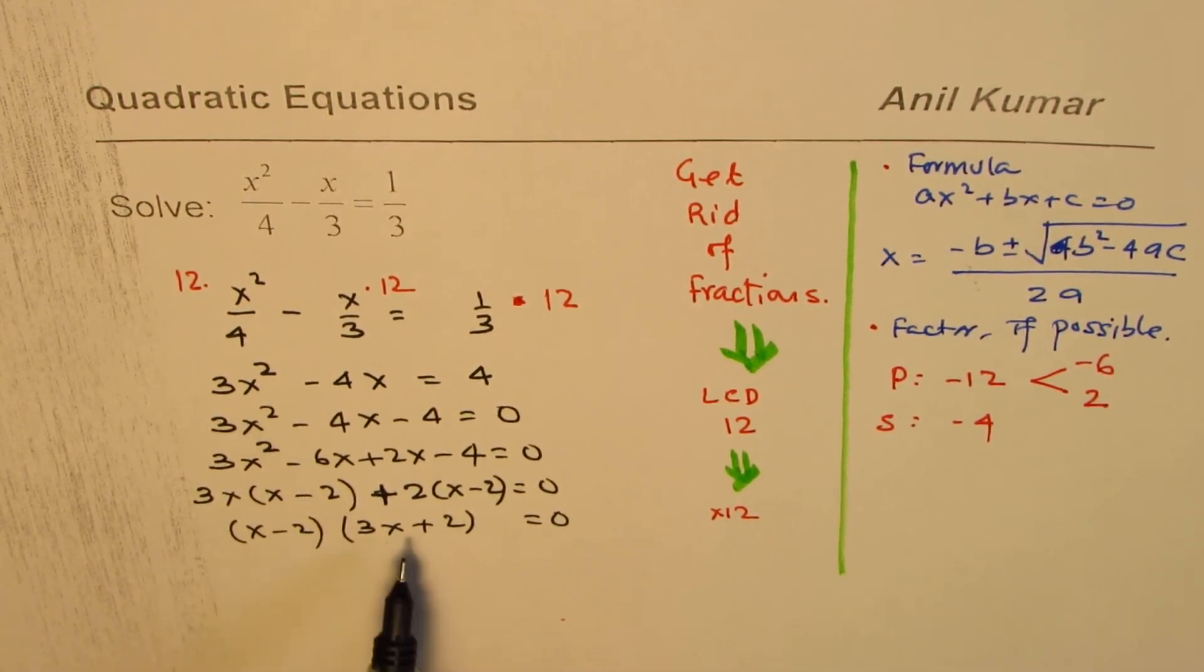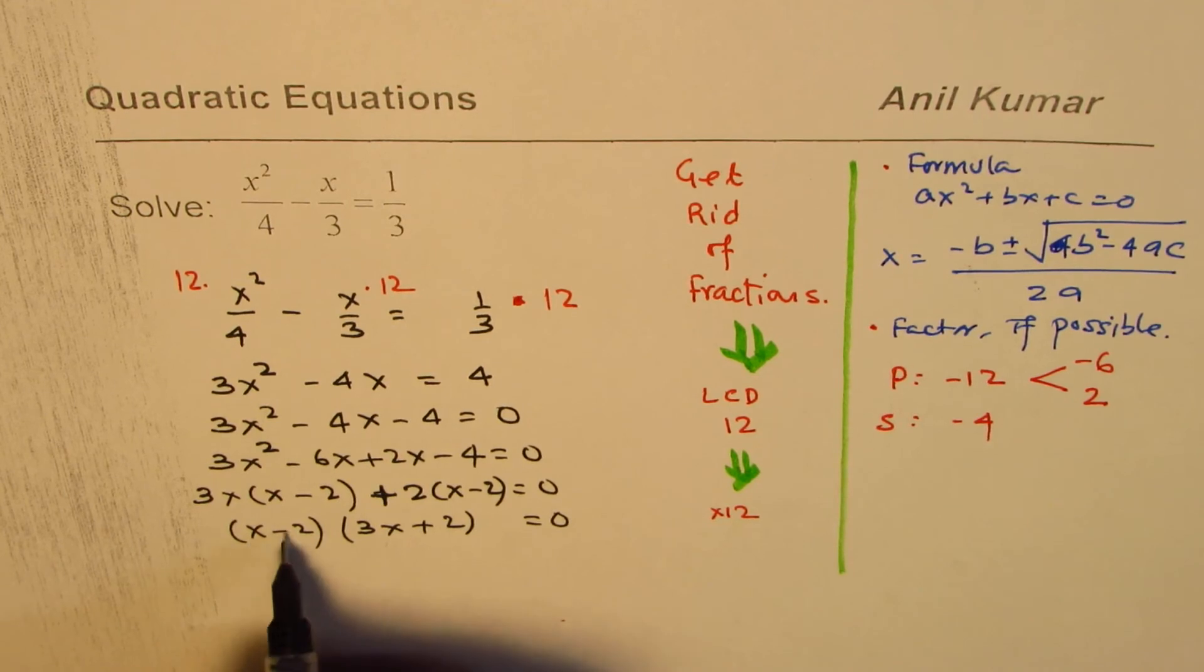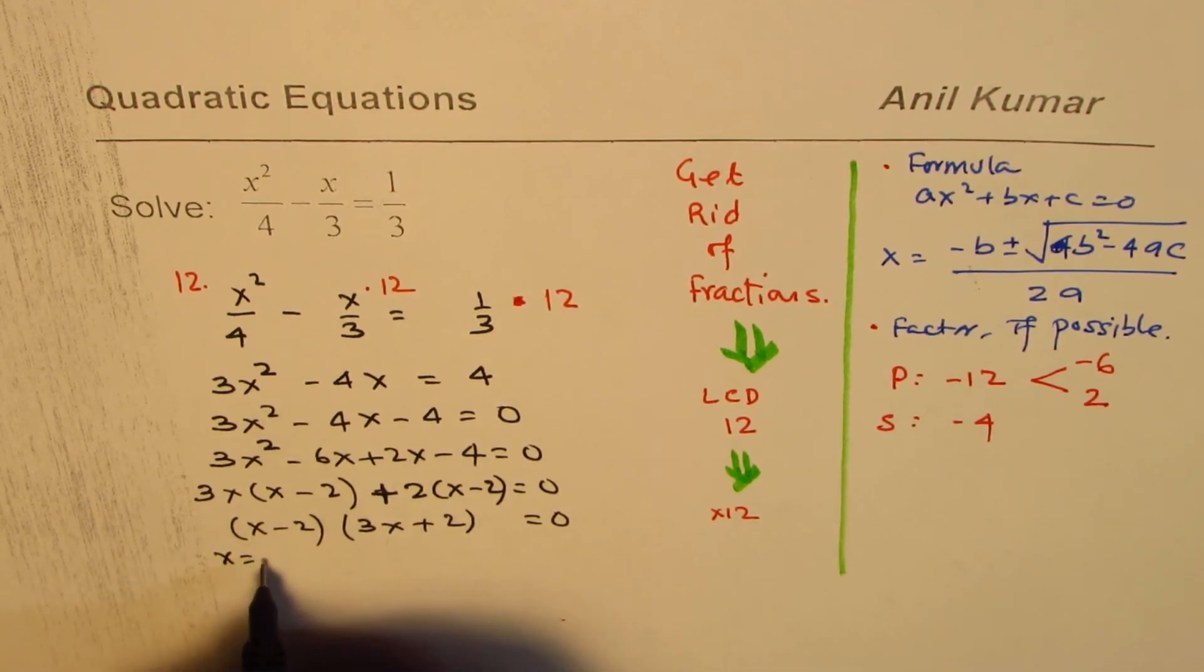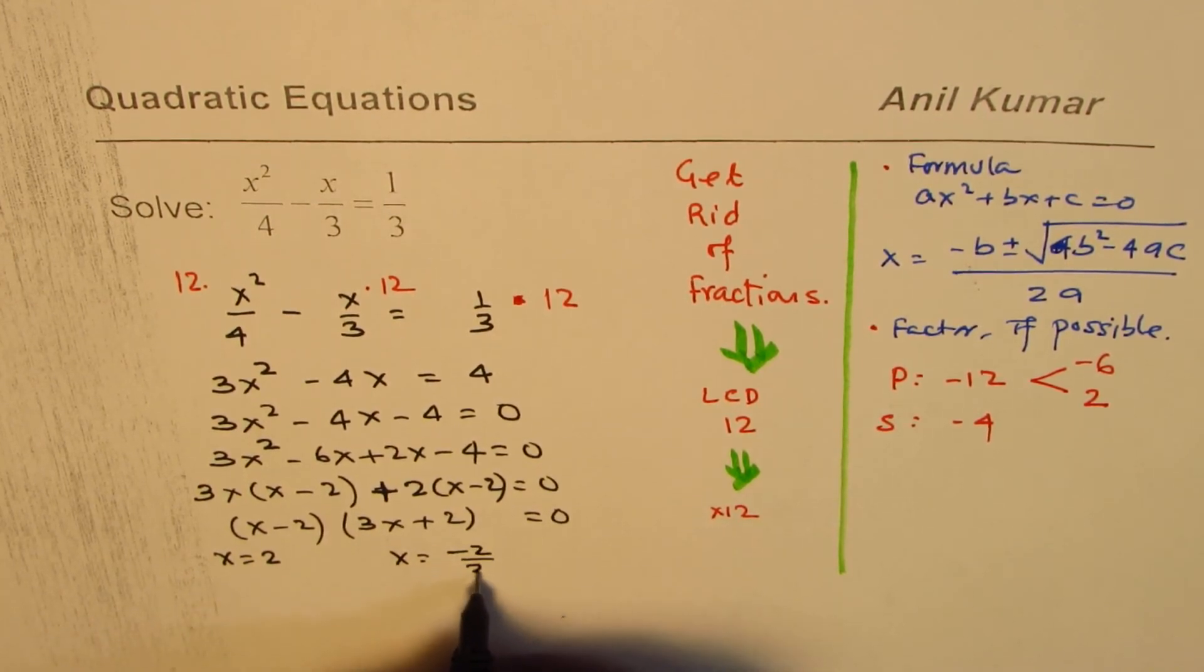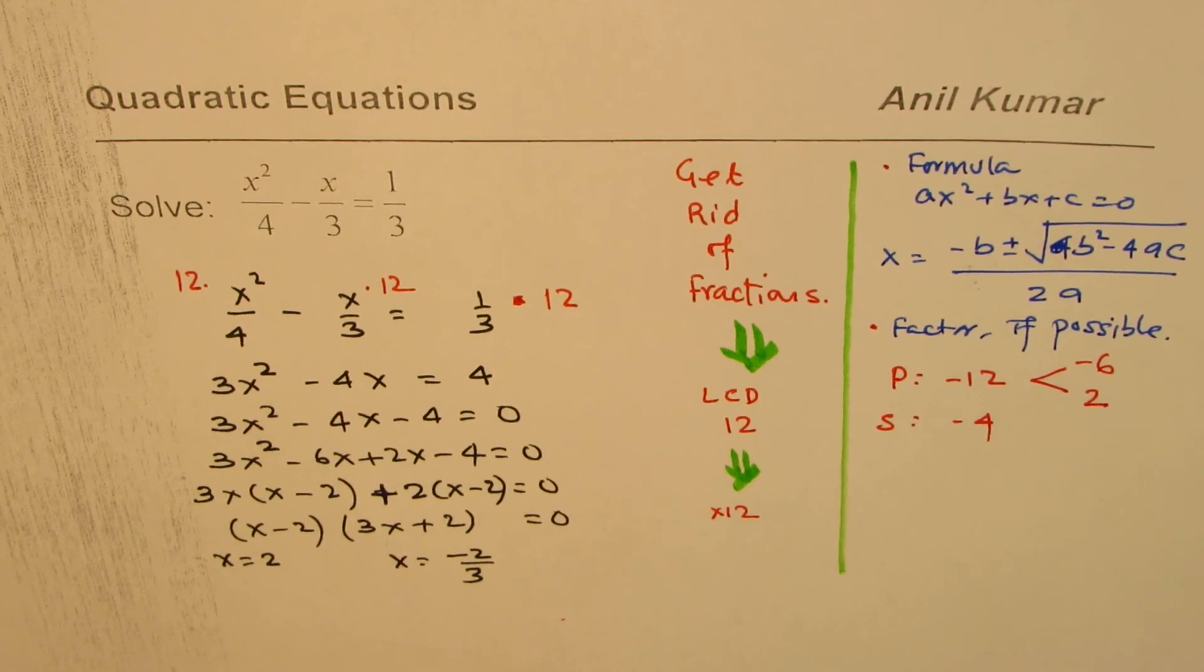How? When you multiply two factors and you want to get 0, then you could equate each to 0. So x minus 2, so x equals 2 will make x minus 2 zero. And x equals minus 2 divided by 3 will make that factor 0. And therefore, that becomes your answer. So that is how you get solution of your quadratic equation by getting rid of fractions.